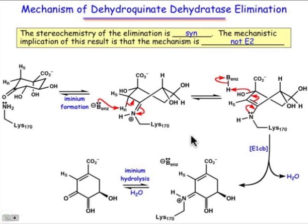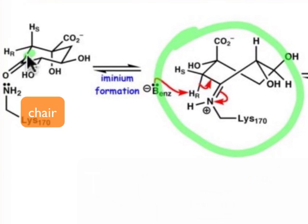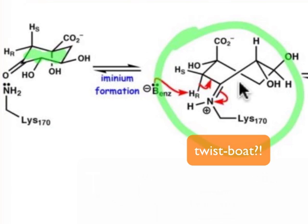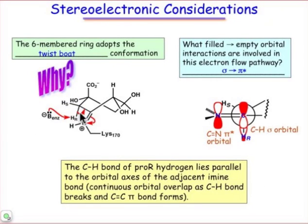Let's take a look at one more thing. If you notice, I've drawn this structure in kind of a funny way. Here is the normal chair form, but I've drawn this in a twist boat form. And it turns out there's a reason that people think the enzyme forces the substrate to occupy this twist boat conformation, because it — as you'll see on the next slide — changes the orientation of this hydrogen bound to carbon in the α position to be almost perpendicular to the plane of that double bond. By inducing that conformation in the substrate, the relationship between the carbon-hydrogen bond and the π system places those groups such that there can be orbital overlap between the CH σ bond and the π* system.